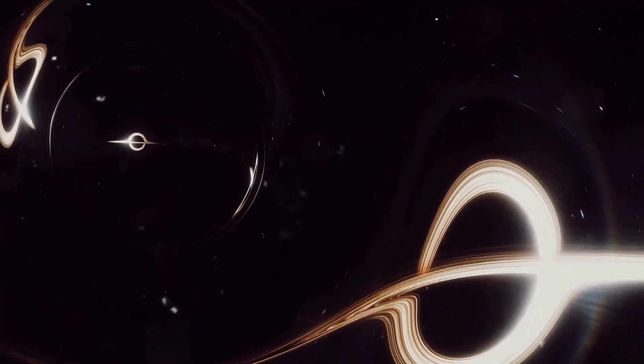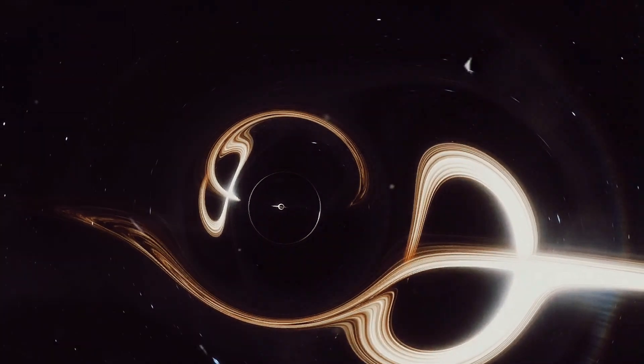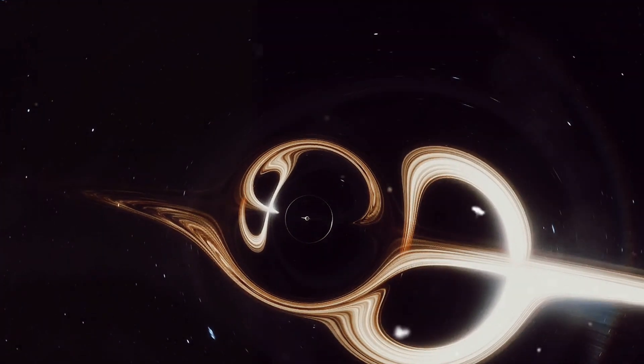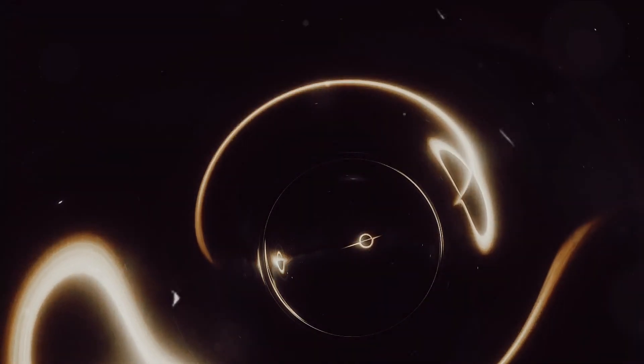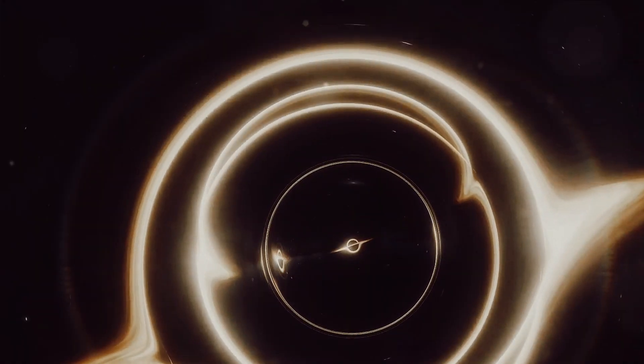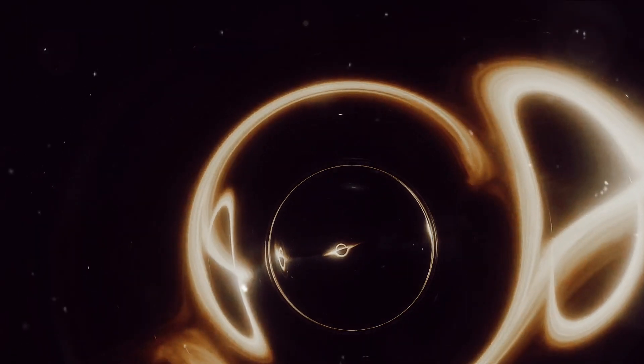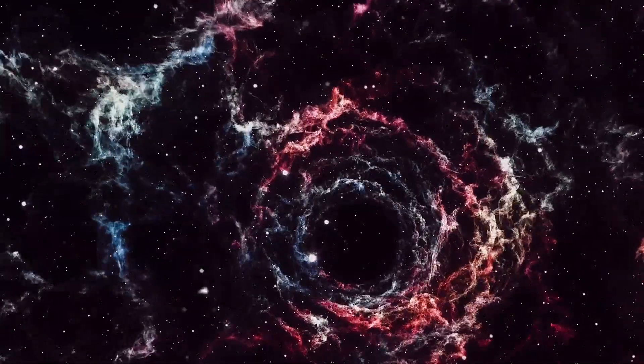But the journey doesn't end there. As the spaceship moves closer to the black hole, it would start to experience a bizarre and brutal transformation. This is due to the intense gravitational pull acting differently on different parts of the spaceship. The end closer to the black hole would feel a stronger pull than the far end, causing the spaceship to stretch out. This process is known as spaghettification, a term that paints a vivid picture of the fate that awaits anything daring enough to approach a black hole.